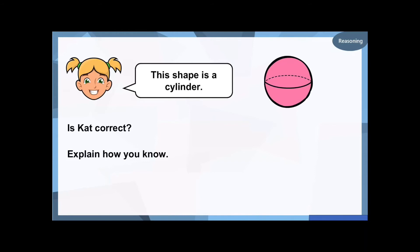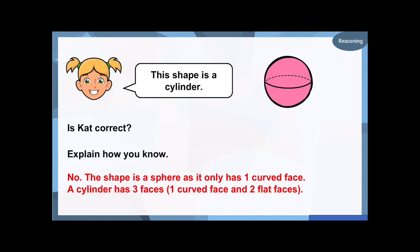Right, so we've got a reasoning question now. This is a thumb up or thumb down. Kat says, 'This shape is a cylinder.' Is she right? Pause the video and not only say if she's right or wrong, but also tell us how you know. I think she's right because, or I think she's wrong because. Okay, well done if you said no, she's not right. This shape is a sphere because it's got one curved face and a cylinder is a bit like a tin or can. It's got two circle flat faces and one big curved face. So she was not right.